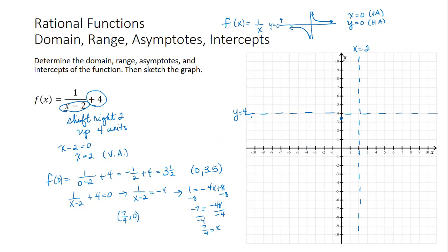So now we can graph. We know that the left piece is below the horizontal asymptote and to the left of the horizontal asymptote. We have two key points that we can use to graph. And our other piece has to be above the horizontal asymptote and to the right.